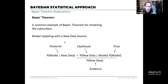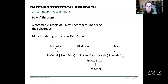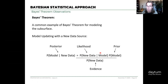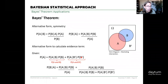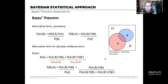A more intuitive way to express Bayesian statistics for machine learning: the prior is the probability of the model parameters, the likelihood is the probability of the new data given those model parameters, and the posterior is the probability of the model given the new data. The evidence term doesn't care about the model - it's just the probability of the new data. This framing will be how we approach Bayesian linear regression shortly.